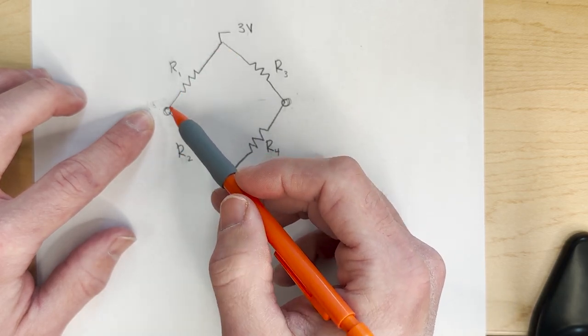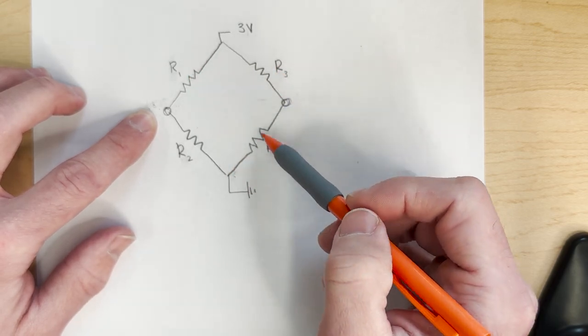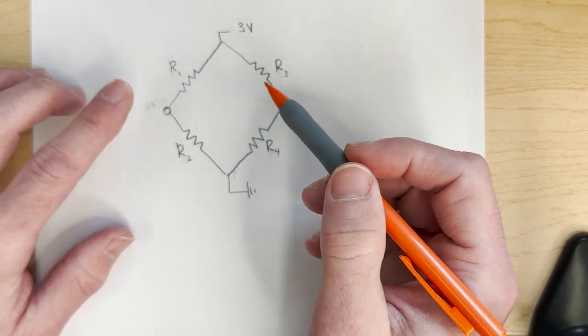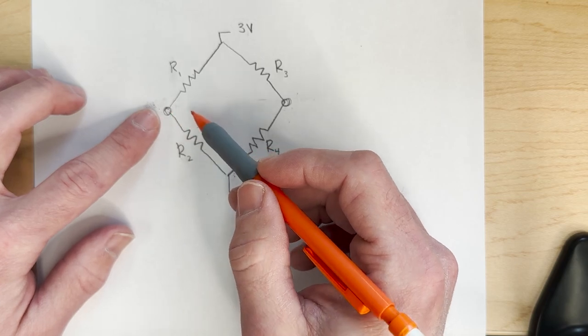This is called a Wheatstone bridge. This is a full bridge, meaning we have four different strain gauges attached, and we are able to detect very small differences of strain or, in your case, measuring small differences in weight.